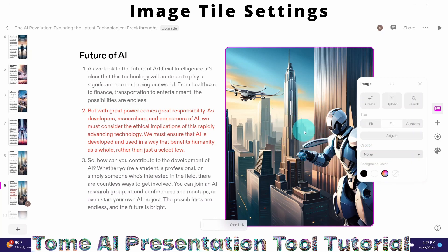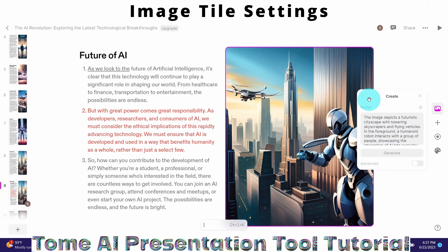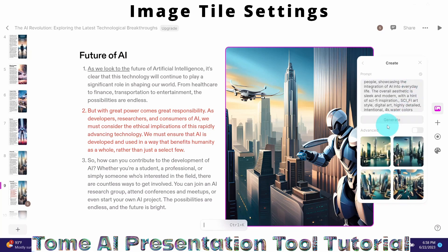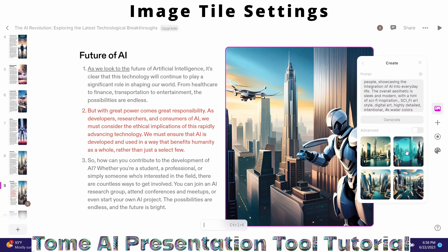Suppose you want to change the image and use a slight variation. Click on the create icon and you can see the original prompt Tommy used to generate the image. You can make slight adjustments to the prompt or give your own prompt. I'll add 'watercolor' to the prompt and see what happens — it generates four different images. If you like one of them you can select it. I select the second one and the image has changed.